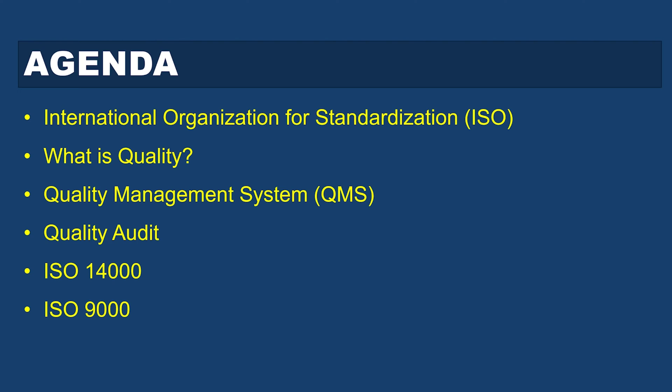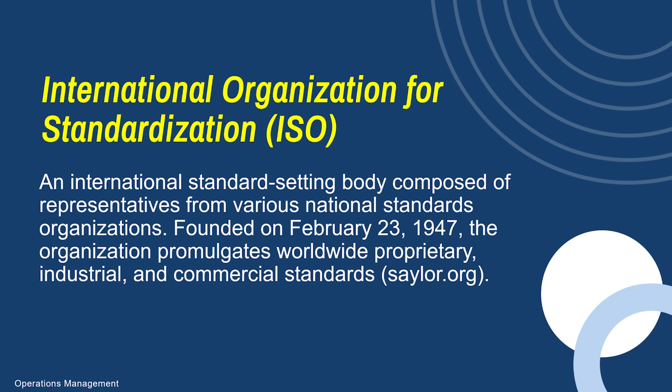So where did this all come from? How does it start? How do companies develop what we call a quality management system? It all started back in 1947, where the International Organization for Standardization was created — the ISO. It's an international standard-setting body composed of representatives from various national standards organizations, and their job is to set standards pertaining to quality.